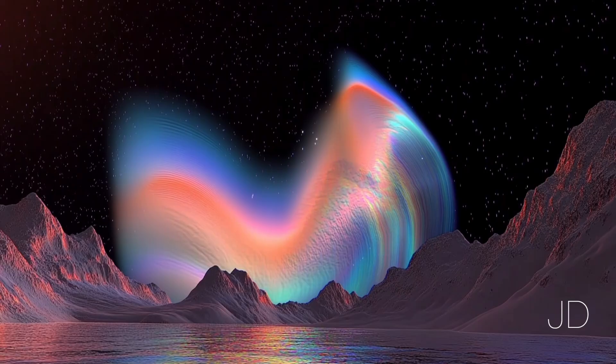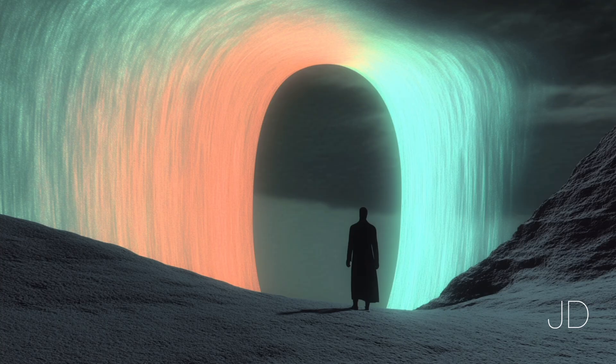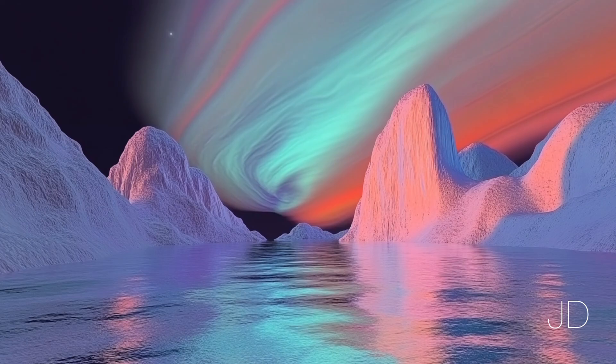We're talking solar flares and coronal mass ejections or CMEs for short. Think of it like the sun just hurling a giant wave of charged particles across space. And sometimes we, Earth, just happen to be in the way. Now that sounds kind of scary. What happens when one of those solar punches actually hits us?